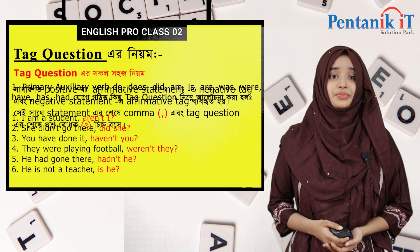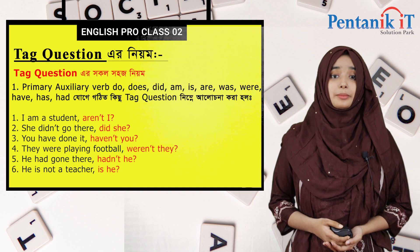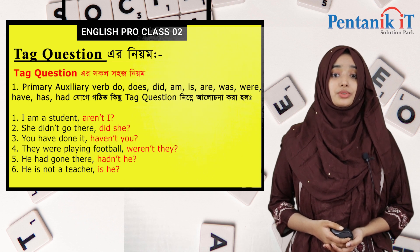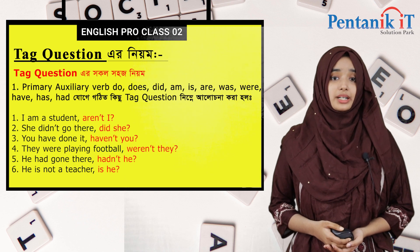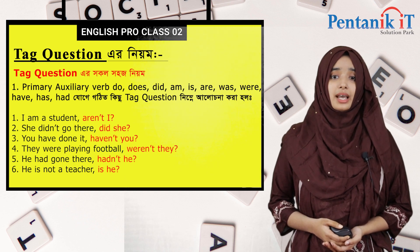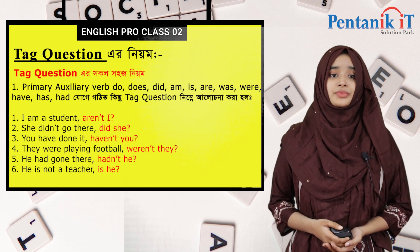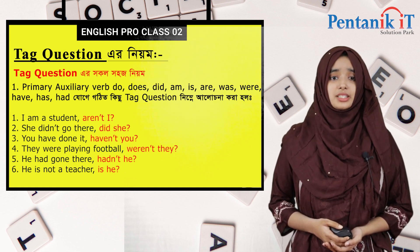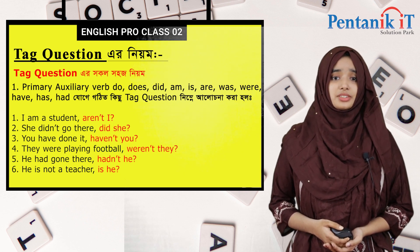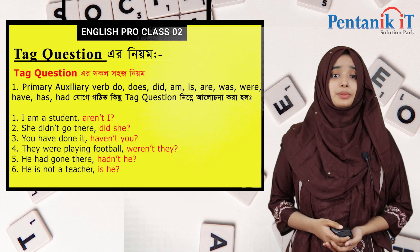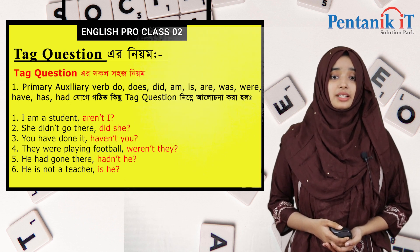Tag question-এর সহজ কিছু নিয়ম আছে। First হচ্ছে primary auxiliary verb: do, does, did, am, is, are, was, were, have, has, had। যোগে গঠিত tag question নিম্নে আলোচনা করা হলো: I am a student, aren't I? She didn't go there, did she? You have done it, haven't you? They were playing football, weren't they? He had gone there, hadn't he? He is not a teacher, is he?